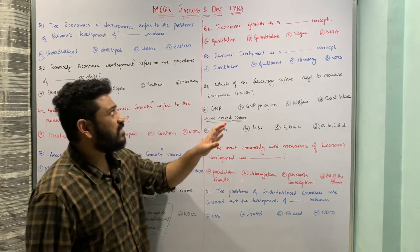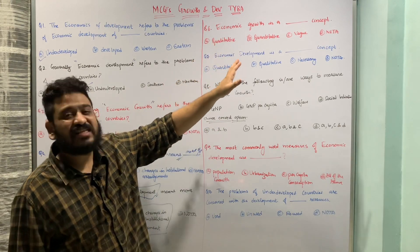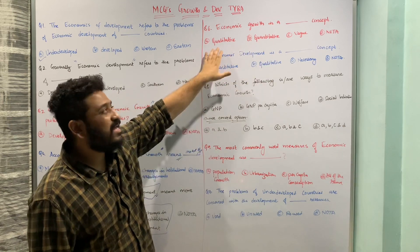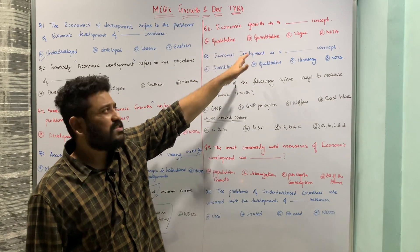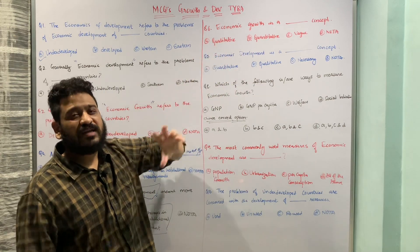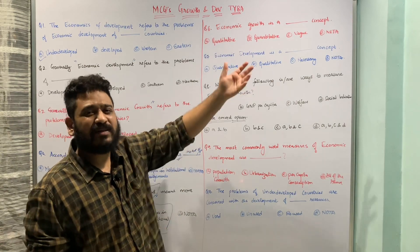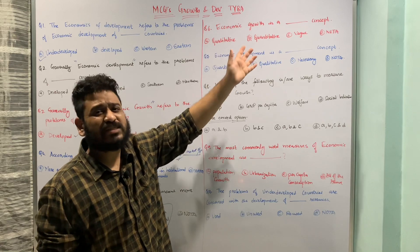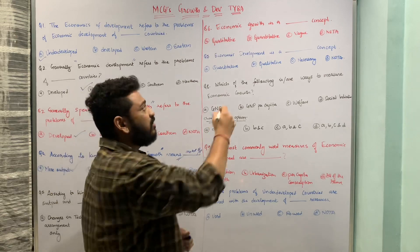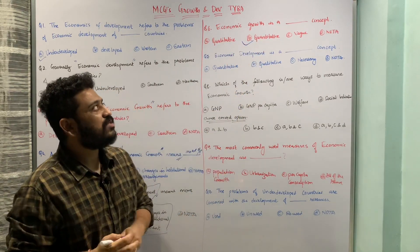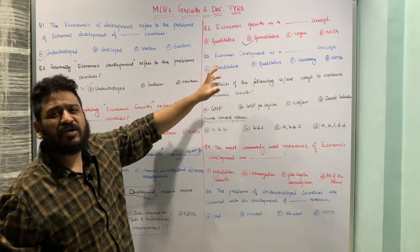The next question: 'Economic growth is a ___ concept.' The options are: qualitative, quantitative, vague, or none of the above. Economic growth can be quantified — measured month on month, year on year, or quarter on quarter — so economic growth is a quantitative concept. Option B, quantitative concept, is the correct answer.